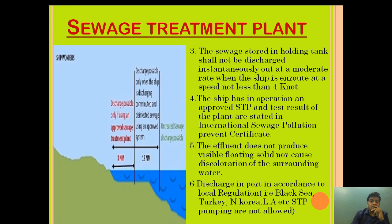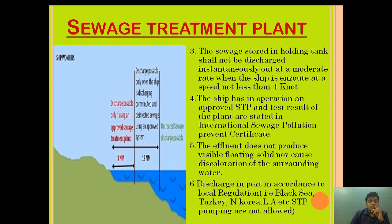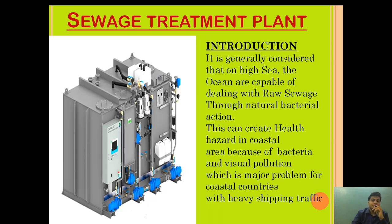Apart from these rules, there are certain countries and regions that totally prohibit discharge of sewage in their waters — even if you are three or 12 nautical miles away. These include the Black Sea, Turkey, and North Korea. When passing through these regions, we must store the sewage in a tank approved by the classification society, continuously disinfect it, and only discharge it at a moderate rate once we are out of the region and 12 nautical miles away.